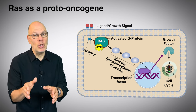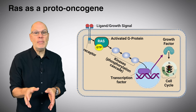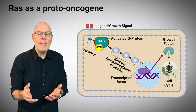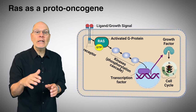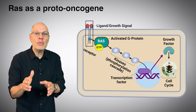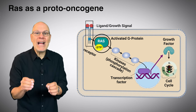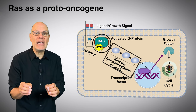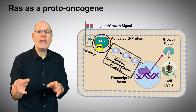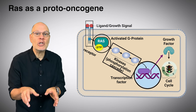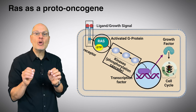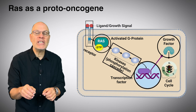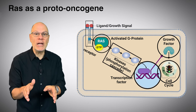In its normal form, the RAS gene codes for molecules that encourage the cell to progress through the cell cycle. RAS is a G-protein, positioned on the inside of the membrane close to a receptor. When a ligand binds with that receptor, RAS becomes activated and it initiates a phosphorylation cascade. At the end of the cascade, a transcription factor is activated that codes for a growth factor, which encourages the cell to move through the cell cycle.